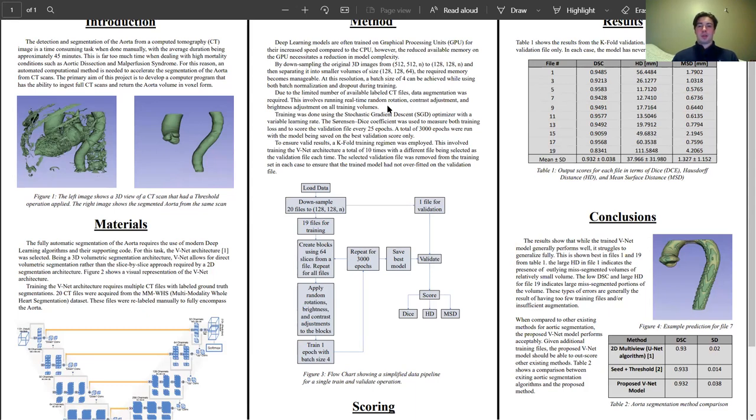The training was done using a stochastic gradient descent optimizer with a variable learning rate. The Sørensen dice coefficient was used for both loss and validation scoring. The validation was run every 25 epochs.